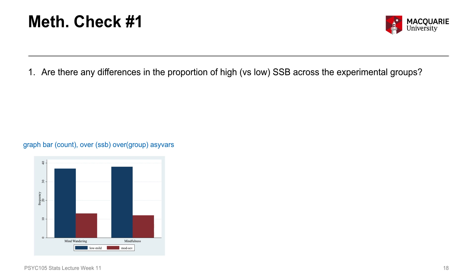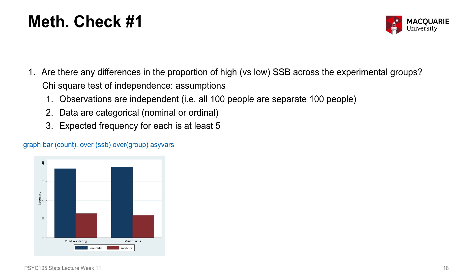Before we can formally test that, we need to make sure our assumptions are met for the chi-square test of independence. There are three assumptions: that our observations are independent, that the data are categorical, and that the expected frequency for each cell is at least five observations. The first two are already known to be true. We know observations are independent because 100 individual people were sampled and no one was sampled twice. We also know the data are categorical — somatic symptom burden has two categories (low-mild vs. moderate-severe) and experimental group has two categories (mindfulness vs. mind-wandering control).